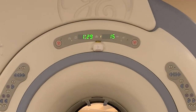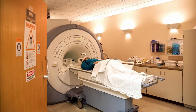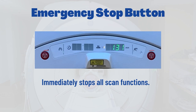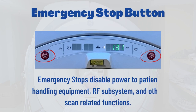The status display panel is centrally located on the MRI magnet to provide a visual reference for scan time, table position, and patient physiological monitors. The MRI status display features one emergency stop button on each side of the patient table for easy access during emergency situations.